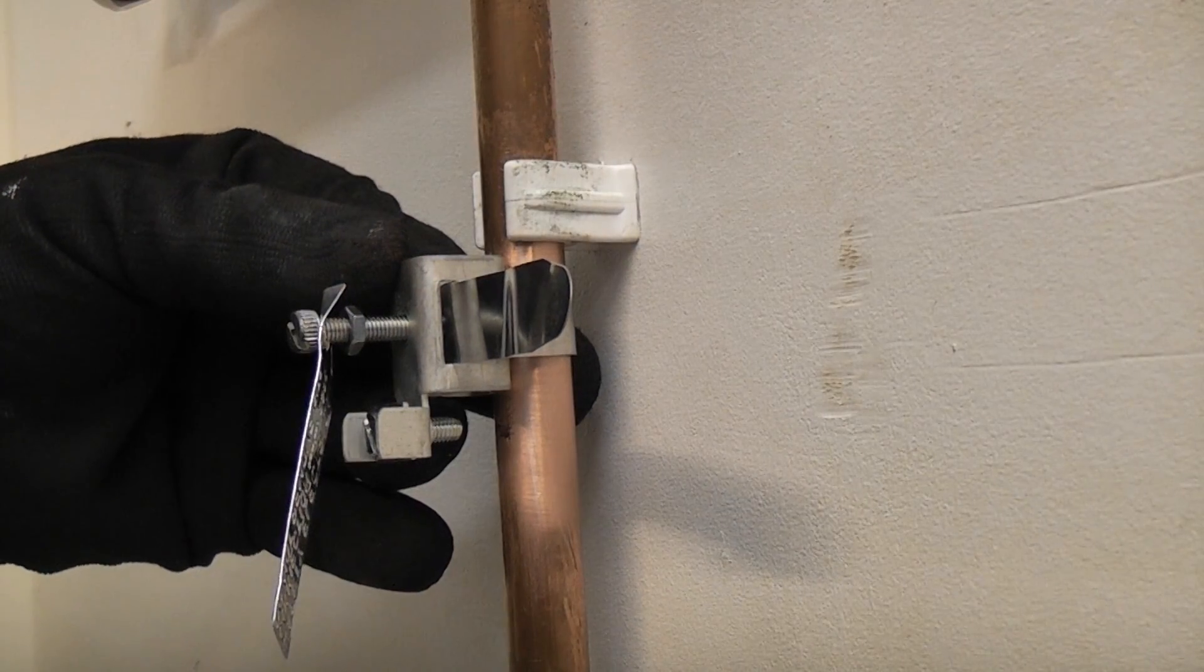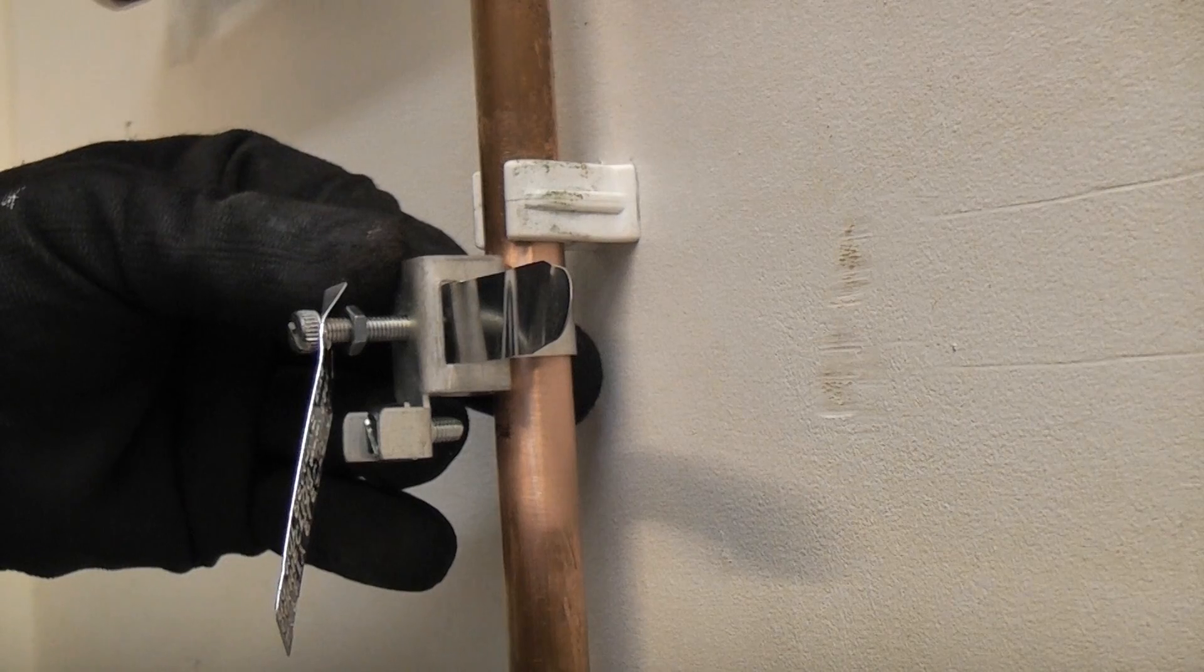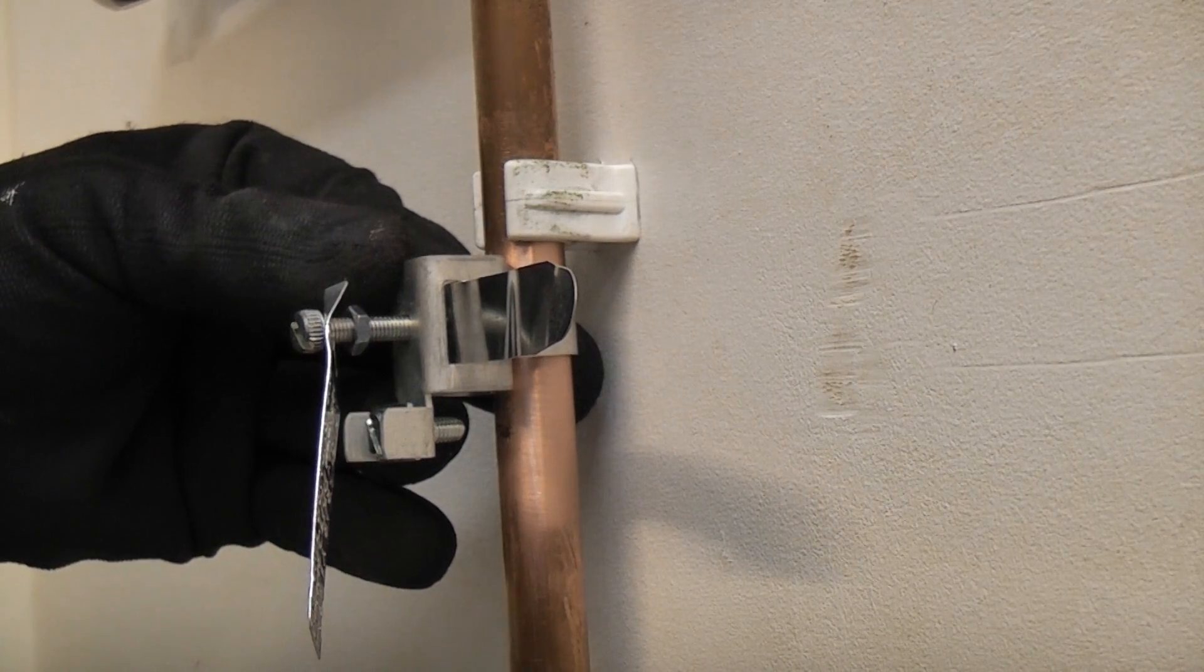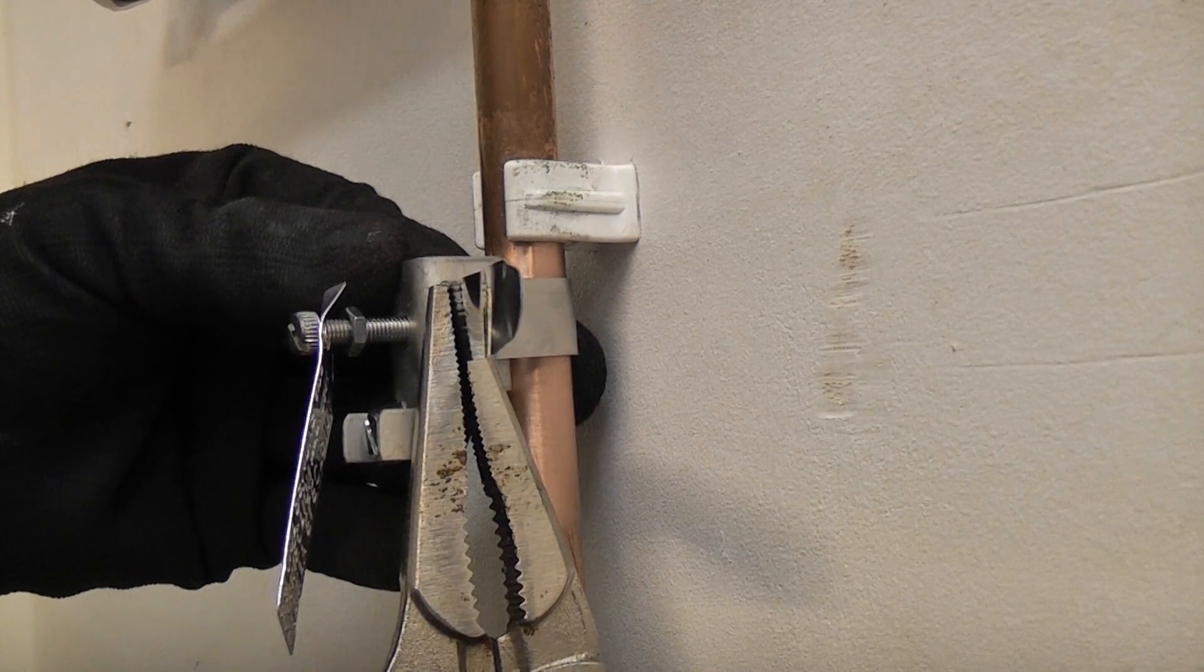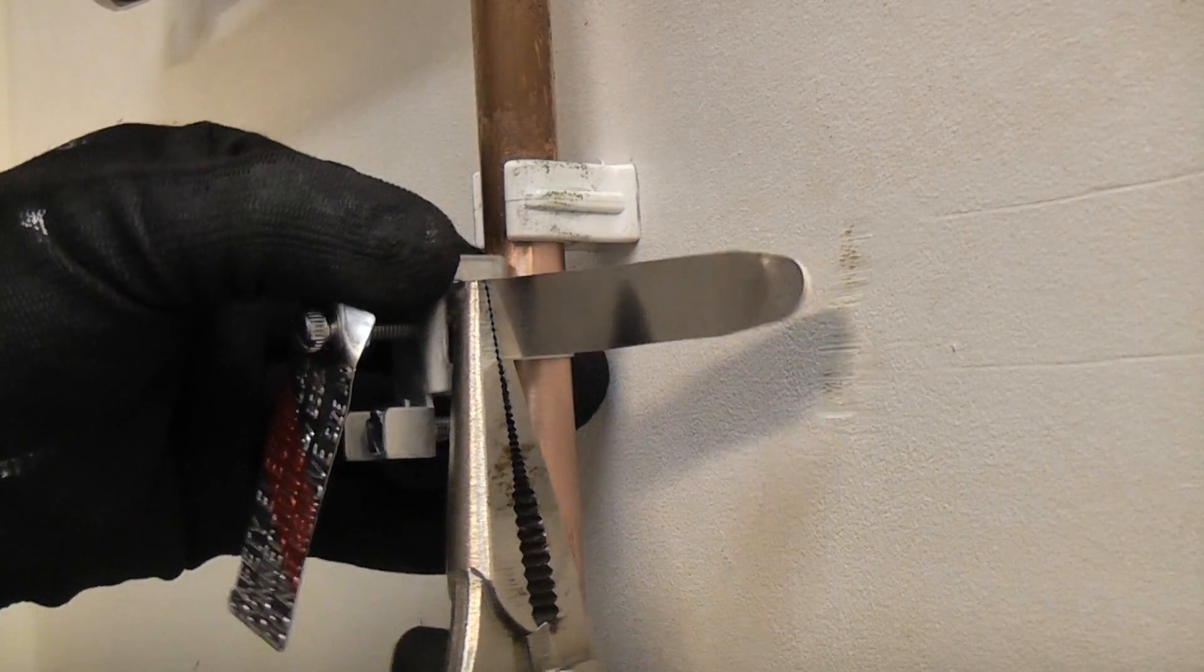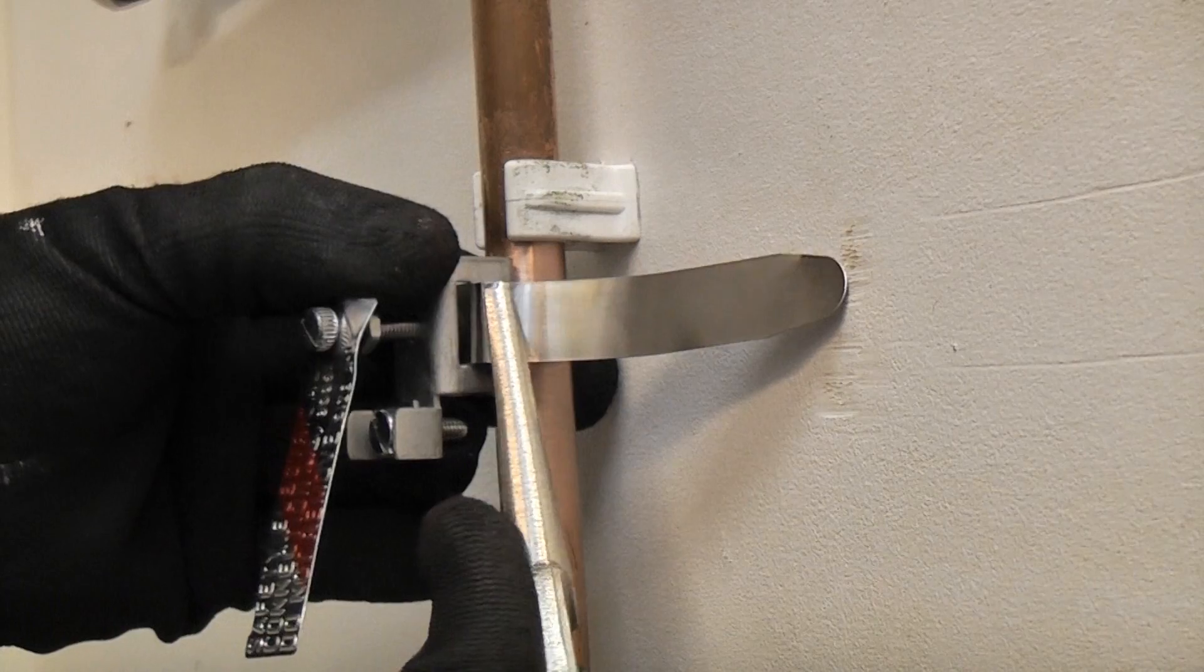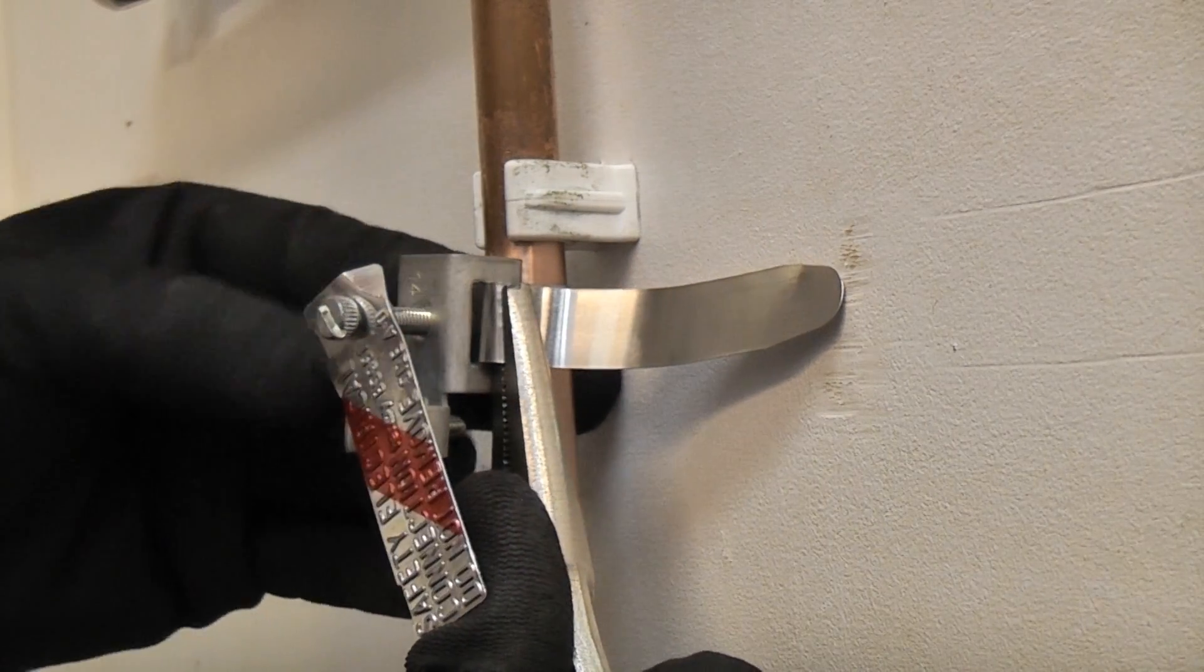So once that's in the correct position I then like to get a pair of mole grips or pliers, grip that on there and then pull it really tight before tightening up the screw.